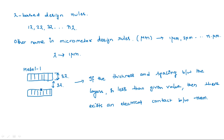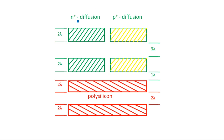All such problems will occur if you violate the design rules, which is why one must follow lambda-based design rules when going for layout diagrams. For each layer — such as N+ diffusion (shown in green), P+ diffusion, or polysilicon — all these layers must have a minimum thickness of 2 lambda. The N+ diffusion layer here has a thickness of 2 lambda, and P+ diffusion (green border with yellow stripes) also has a minimum width of 2 lambda.